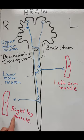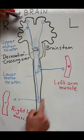So this is how the left side of the brain controls the right side of the body and the right side of the brain controls the left side of the body.